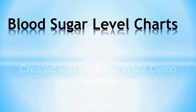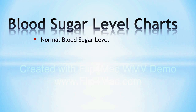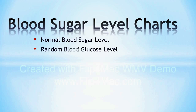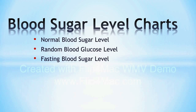The first chart is the normal blood sugar level. She talks about that one and then she goes to a second chart which is called the random blood glucose level. And finally she concludes with the third chart which is the fasting blood glucose level.